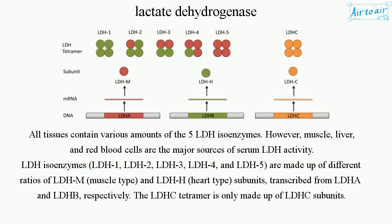All tissues contain various amounts of the five LDH isoenzymes. However, muscle, liver, and red blood cells are the major sources of serum LDH activity. LDH isoenzymes LDH1, LDH2, LDH3, LDH4, and LDH5 are made up of different ratios of LDHM (muscle type) and LDHH (heart type) subunits, transcribed from LDHA and LDHB, respectively. The LDHC tetramer is only made up of LDHC subunits.